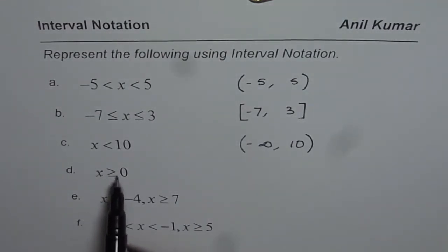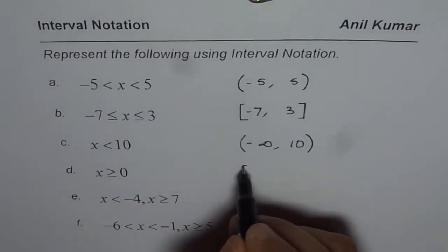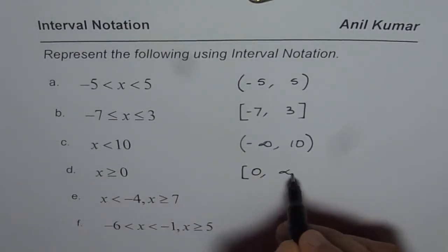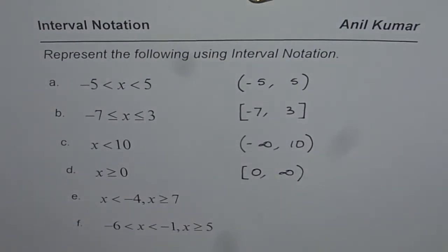Then we have x is greater than or equal to 0. Greater than or equal to means square bracket, starting from 0 up to infinite, which should not be included.